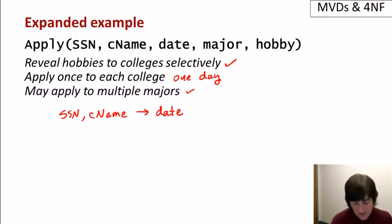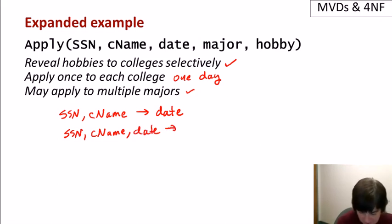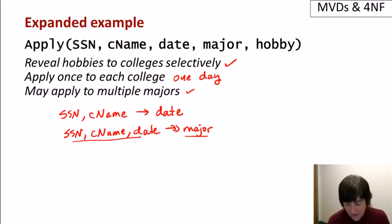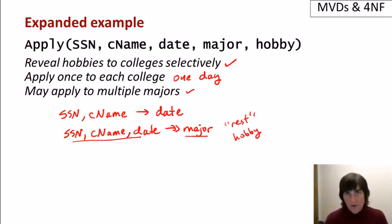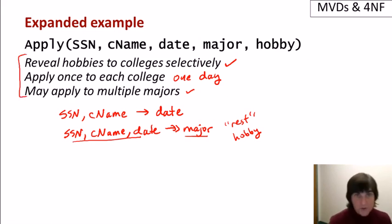The last dependency that we'll have involves the independence of the majors that are being applied for and the hobbies that a student has. And so we'll write that as the multi-value dependency social security number plus college name plus date multi-determines major. And remember what that's saying is that major for a given student, college, and date, the majors that they apply for are independent of what we call the rest, which in this case is the hobbies. So you might take some time to look at the formal definitions of functional dependencies and multi-value dependencies and maybe write out some sample data to convince yourself that these are the dependencies that are capturing the assumptions that we make about the real world.